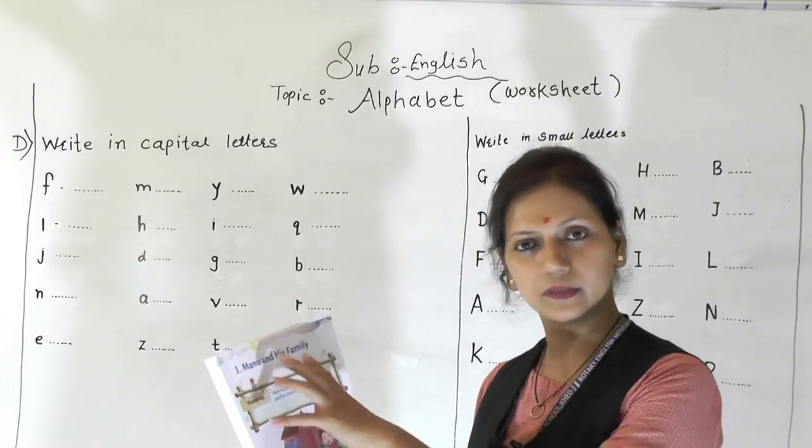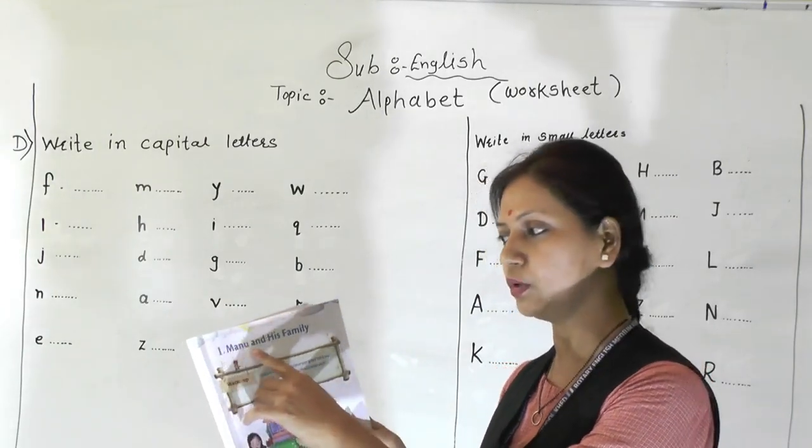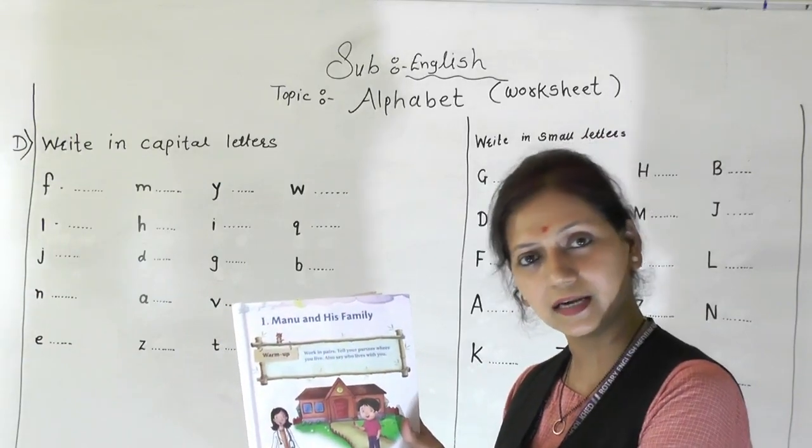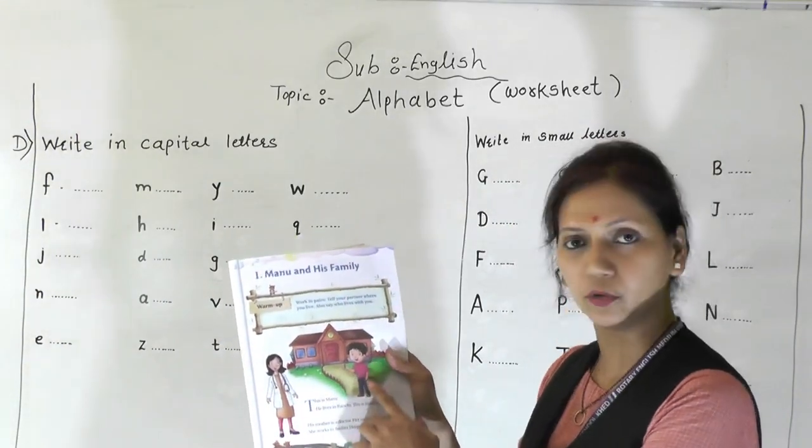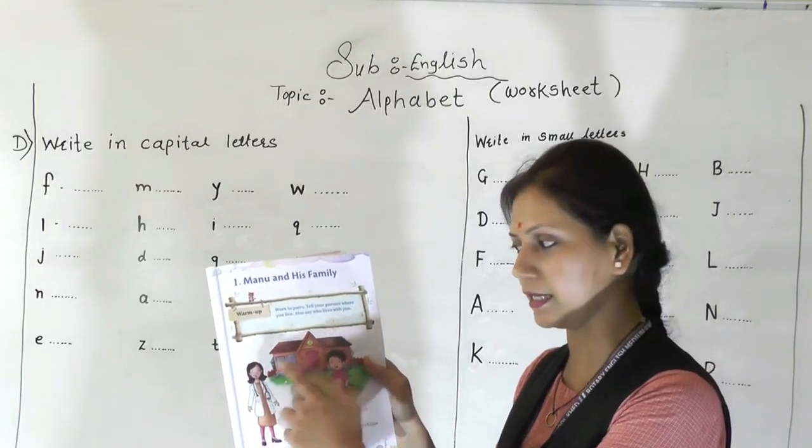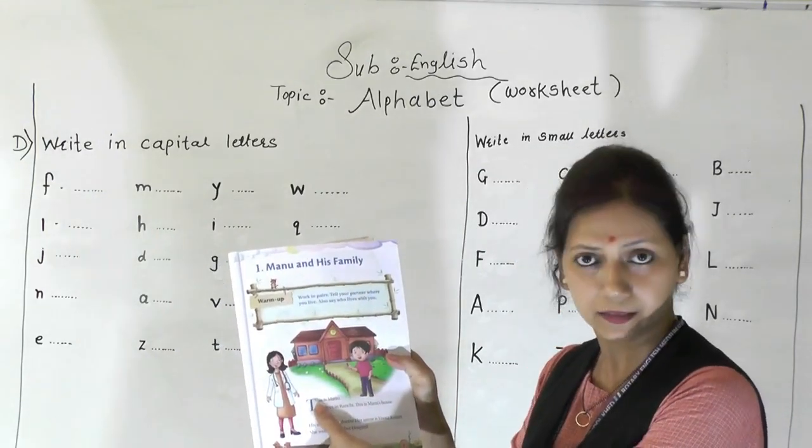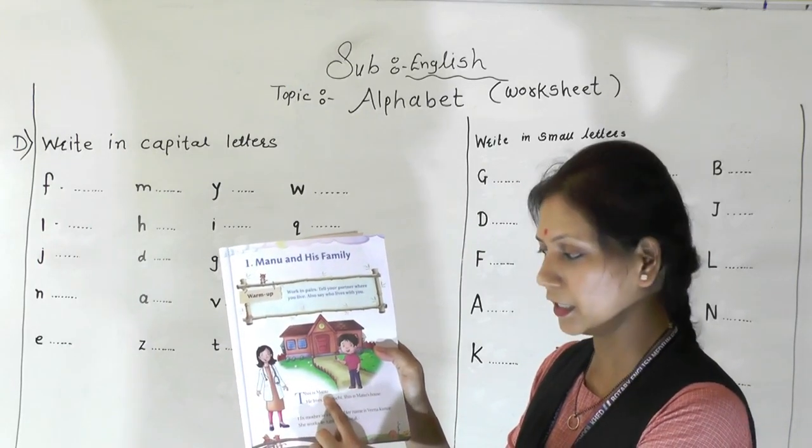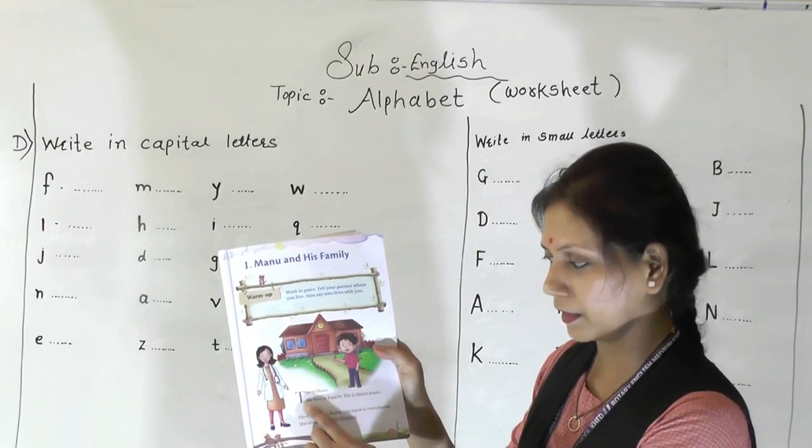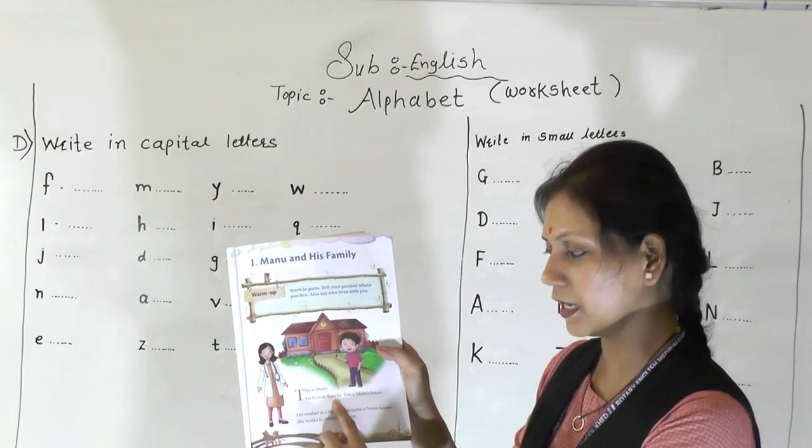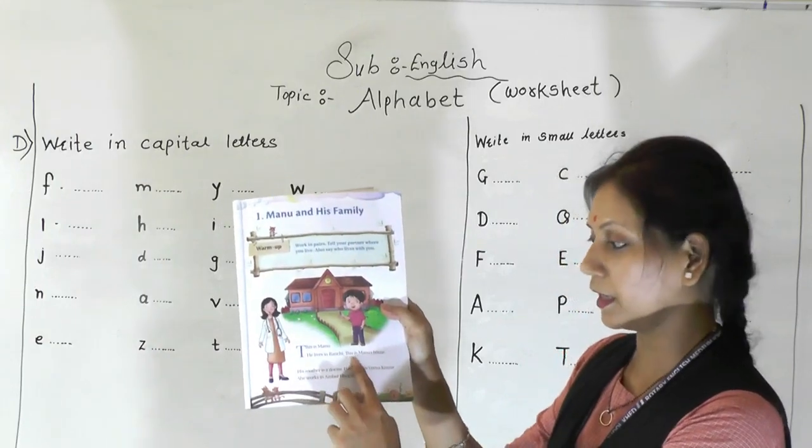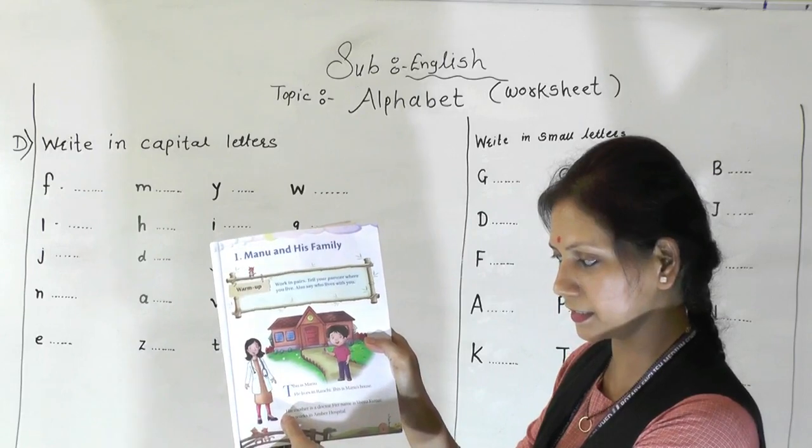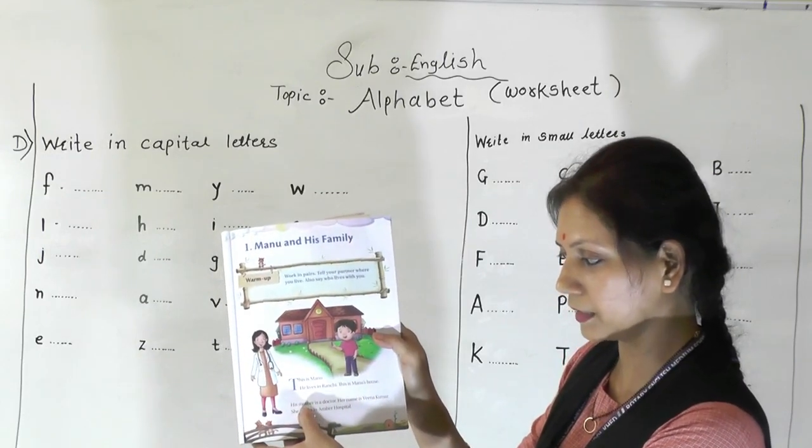This is your first lesson and the lesson name is Manu and his family. So how to read each and every word, that today I'm going to teach. So here is Manu and his house and his mother. The first word is: This is Manu. He lives in Ranchi. This is Manu's house. His mother is a doctor.